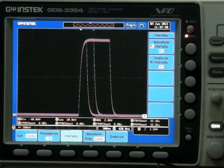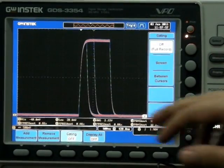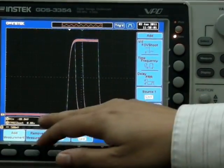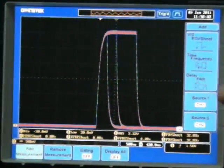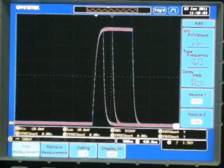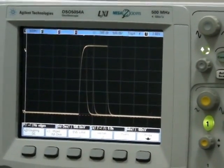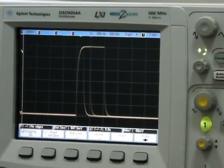In terms of required measurement functions for testing, the measurement items on the GW-INSTEK GDS-3000 series can be quickly selected and 8 sets of measurement items can be selected for a single screen. On the contrary, only 4 sets of measurement items can be selected for the Agilent DS-5000 A series.